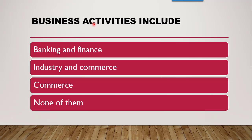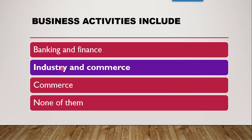The next question is: business activities include — whether it is banking and finance, whether it is industry and commerce, whether it is only commerce, or none of them. The correct answer is industry and commerce. Business activities are classified into industry and commerce. Industry deals with producing goods and commerce deals with the distribution of goods. So business activities include both industry and commerce.